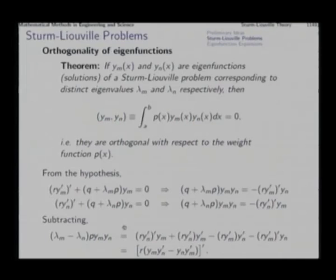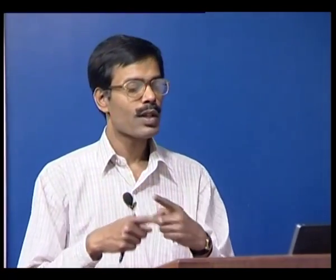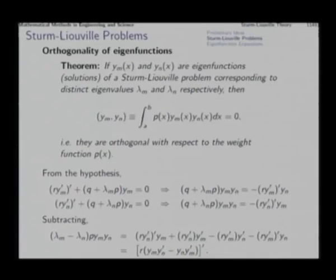This shows that y_m and y_n are orthogonal functions with respect to the weight function p(x) over [a, b] — if they are solutions of the Sturm-Liouville problem corresponding to distinct eigenvalues, they must be orthogonal. You can also extend this to show that eigenvalues of a Sturm-Liouville problem are necessarily real, proved in a similar way to the algebraic eigenvalue problem of symmetric matrices.